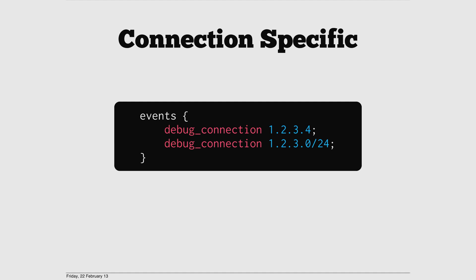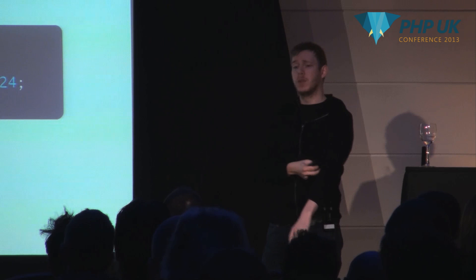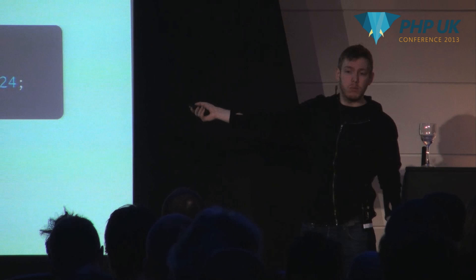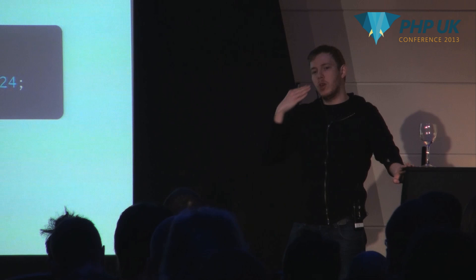What you can do is use connection-specific debug logging. You can set 'debug_connection' and that automatically enables debug logging only for specific IPs or subnets. So you can say: all my developers — I want debug information when they hit my web server, but for everyone else I don't care. Or if you just want your own IP to generate those debug logs, you just put in your own IP. That gives you a lot of low-level information to figure things out.